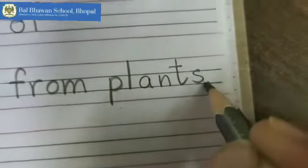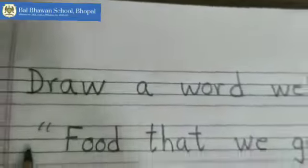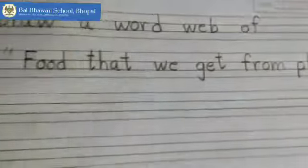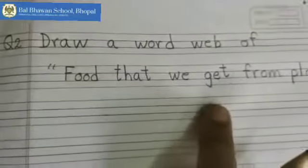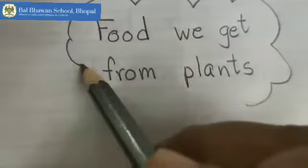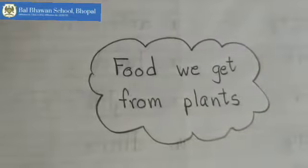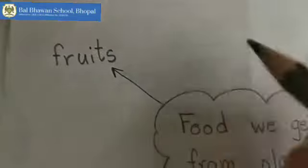All right children, full stop, close inverted commas — these are called open inverted commas and close inverted commas. You have to write this in the four-line, but the word web you are going to draw over here. Food we get from plants — here you can make a cloud, or a circle, or a rectangle. All right children.